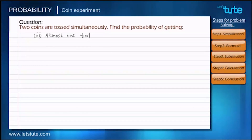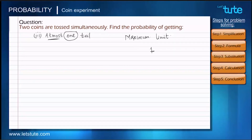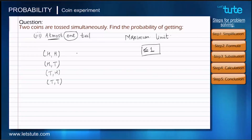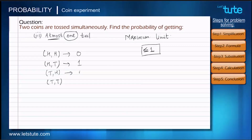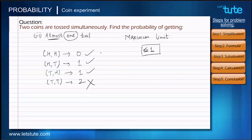For the third sub-question, we find the probability of getting at most one tail. 'At most' means the maximum limit — here, a maximum of one tail, or fewer. So outcomes must have one tail or zero tails. The first outcome has no tail, the second and third have one tail each, and the fourth has two tails. We include the first three and exclude the fourth.